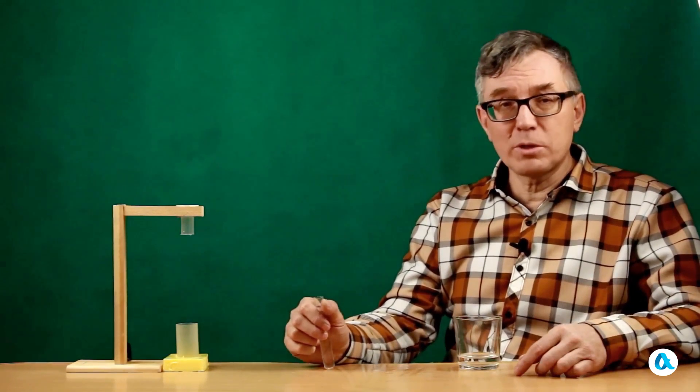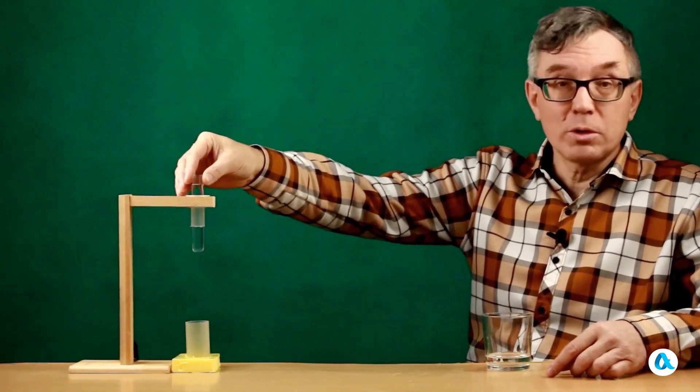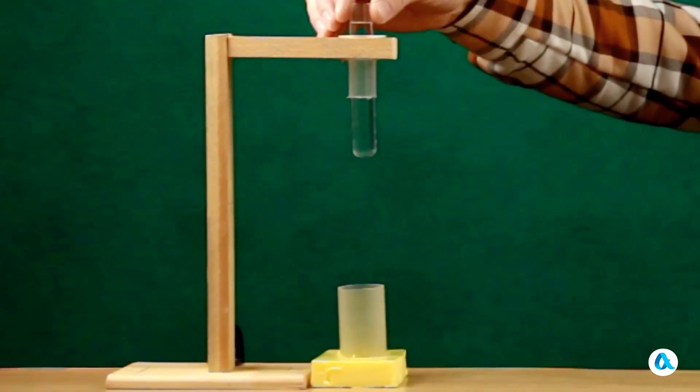However to enable the test tube to move in a vertical direction I will insert it directly into this holder. And now I'll release the test tube and we'll be able to see the details of the formation of the cumulative jet in high-speed shooting.